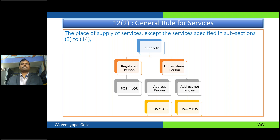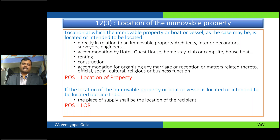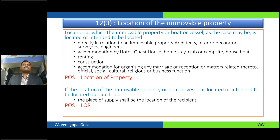First exception: Section 12(3) deals with services related to immovable property. What do we mean? It could be services of architect, interior decorator, surveyor, etc.; services relating to accommodation such as hotels, guest houses, campsites; property renting; undertaking construction of an immovable property; or accommodation for organising marriage, reception, or other such matters. Then the place of supply is location of property.